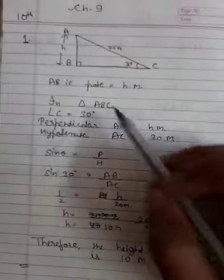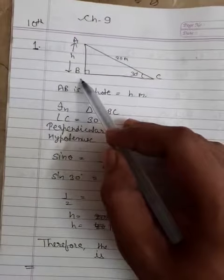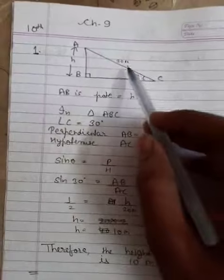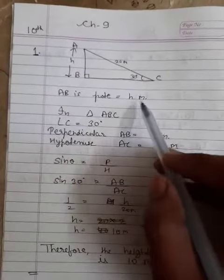Now look at the solution. AB is h meters, angle C is 30 degrees, and AC is 20 meters. AB is the pole with height h meters.